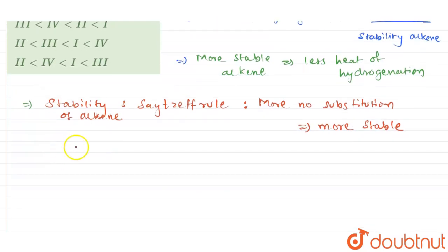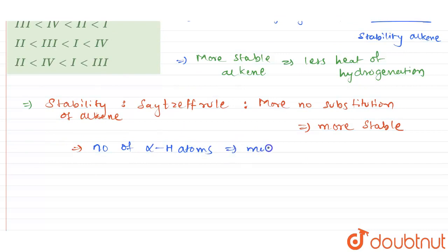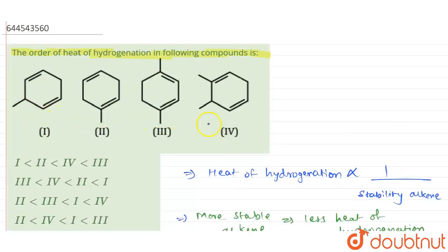When the number of substitutions are the same, we go by the number of alpha hydrogen atoms — more alpha hydrogen atoms means a more stable alkene is present.